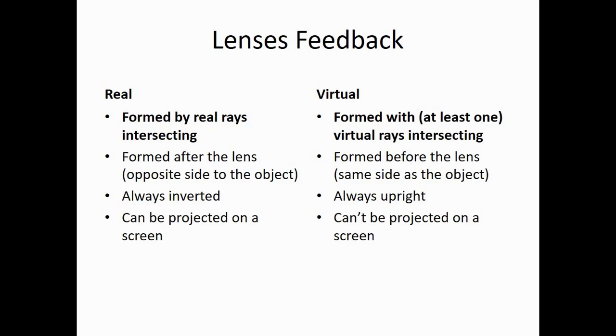The first thing was that there was still some confusion about the difference between a real and a virtual image. This screen shows it all. The important thing is that a real image is formed by real rays intersecting. So on your diagram, solid lines, solid rays will cross at the point where the real image is formed.